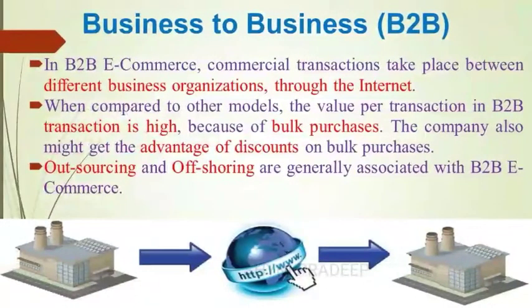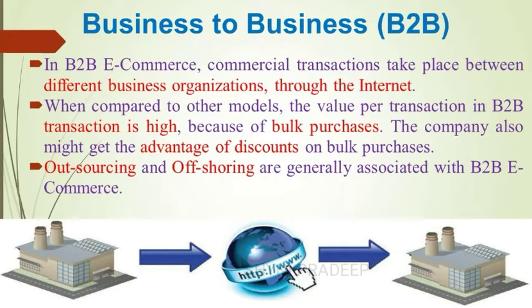In business to business e-commerce, commercial transactions take place between different business organizations through the internet. For example, a cycle company may buy tires from another company for their cycles. When compared to other models, the transaction value in business to business is high because of bulk purchases, and the company may also get discounts on bulk purchases.